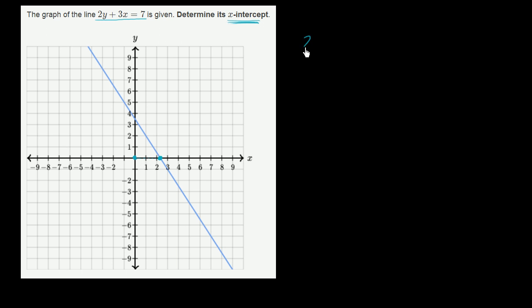So we could just say 2 times 0 plus 3x is equal to 7. Well, 2 times 0 is just going to be 0. So we have 3x is equal to 7. And then we can divide both sides by 3 to solve for x. And we get x is equal to 7 over 3.